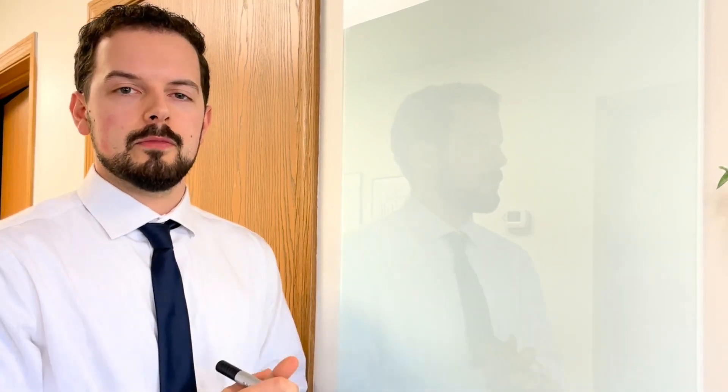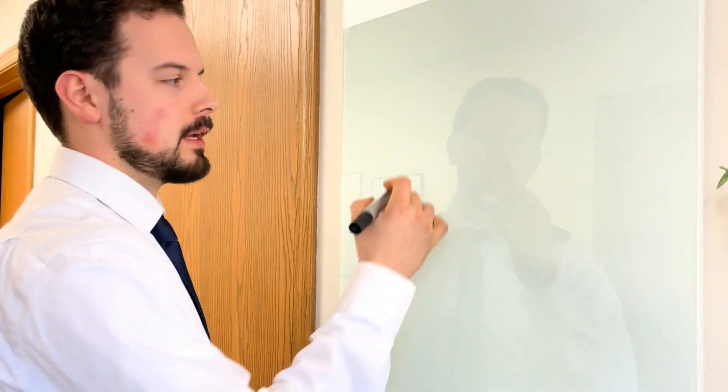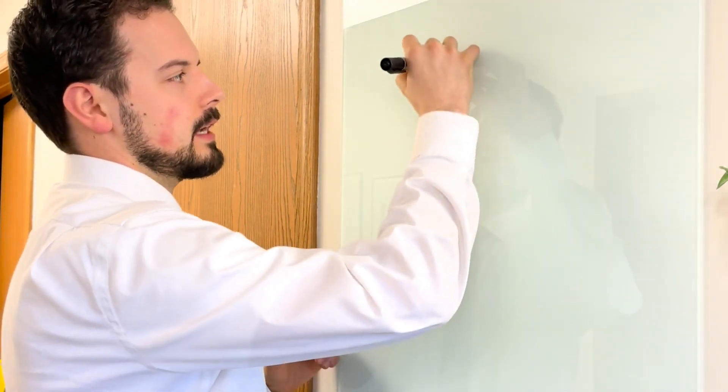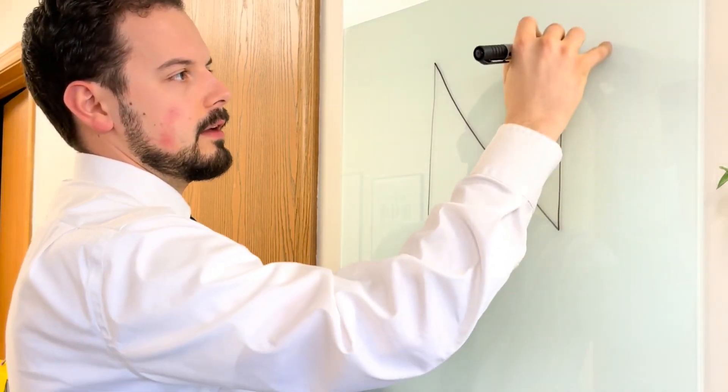Today we're going to be drawing the end diagram which is made famous by the late great Dr. Reggie Gold. This is a perfect way to explain chiropractic, how chiropractic can affect everything that goes on in your life.